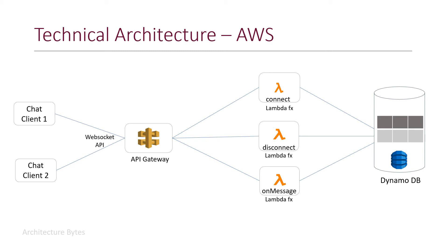In the case of disconnect, the disconnect Lambda function gets invoked — it deletes the corresponding record from the DynamoDB table and sends a message to all other chat clients about this particular user disconnecting. In the case where one user is trying to send a message to another user, the on-message Lambda function gets invoked. The target username or connection ID should be available in the incoming message. The Lambda function can send a message to a target client only if it knows the target connection ID. If only the username is available, the target connection ID can be looked up from the DynamoDB table and then a message sent to the target chat client.